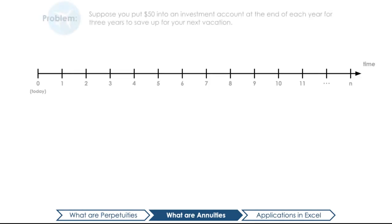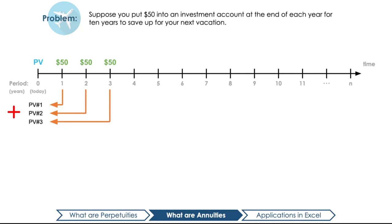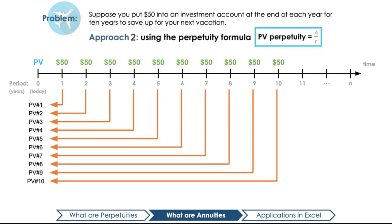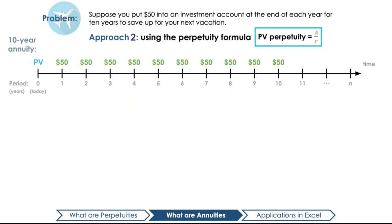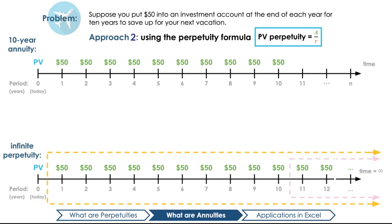There are two ways of calculating the present value of an annuity. Let's say you put $50 into an investment account at the end of each year for three years to save up for your next vacation. If we want to find the present value of those payments, we can simply solve for the present value of each payment and add them together. But what if you put in $50 per year for 10 years? Personally, I can't be bothered to calculate 10 present values. A faster method is to use a version of the perpetuity formula we discussed earlier.